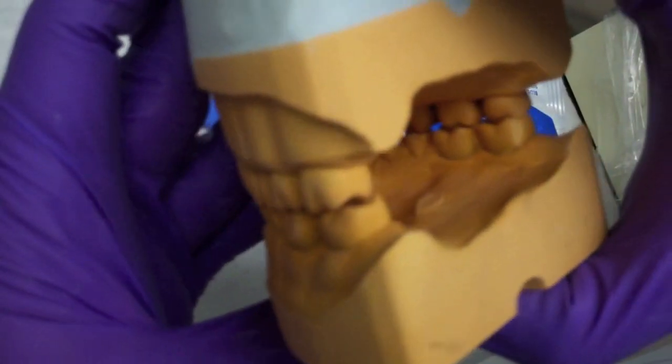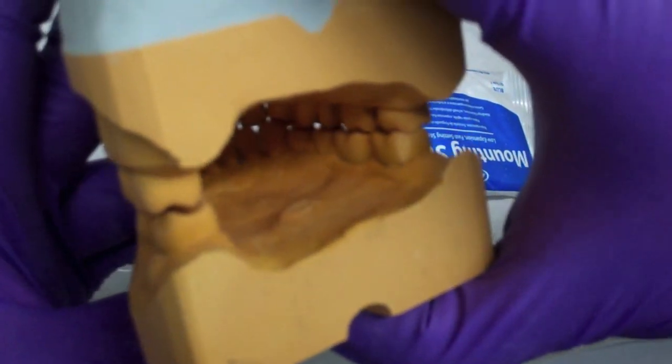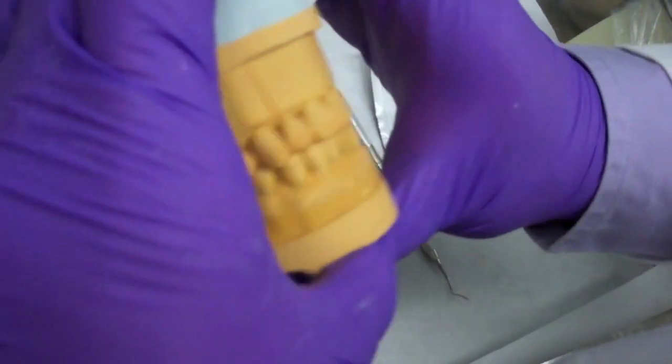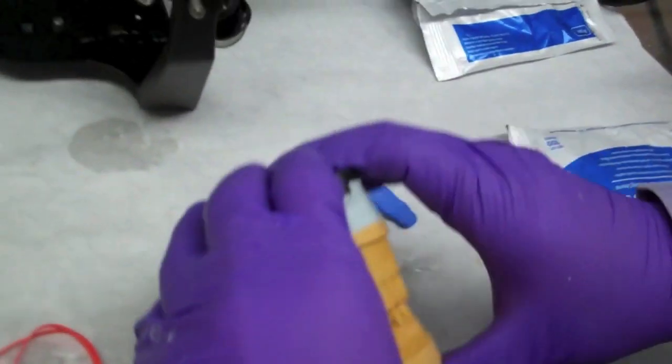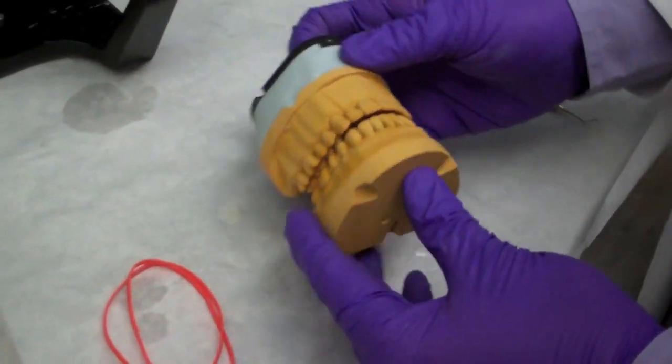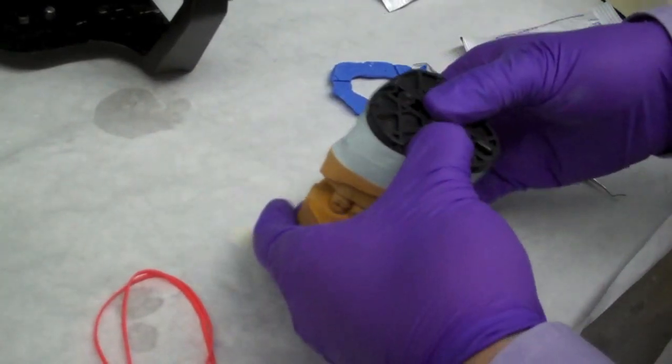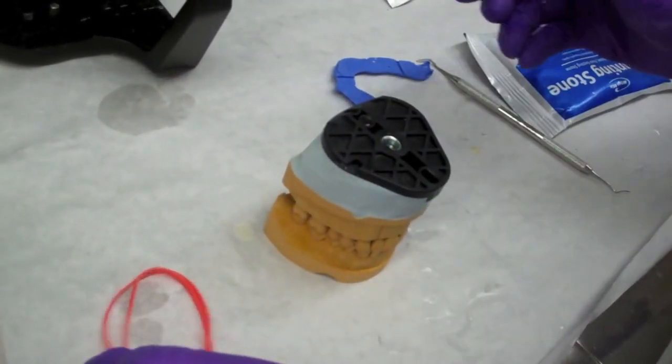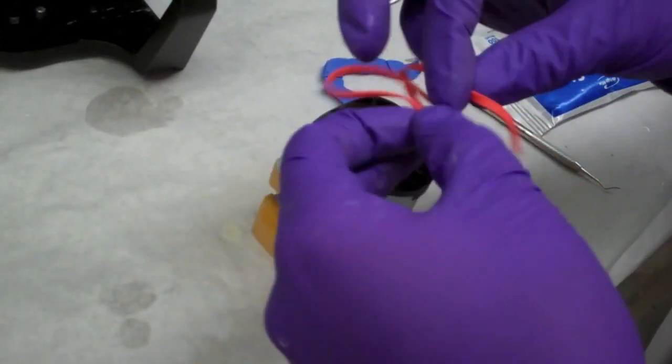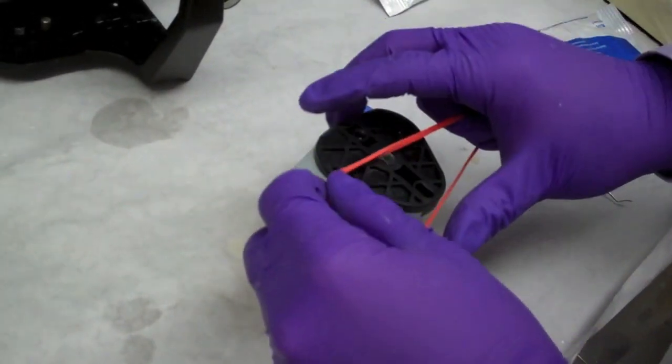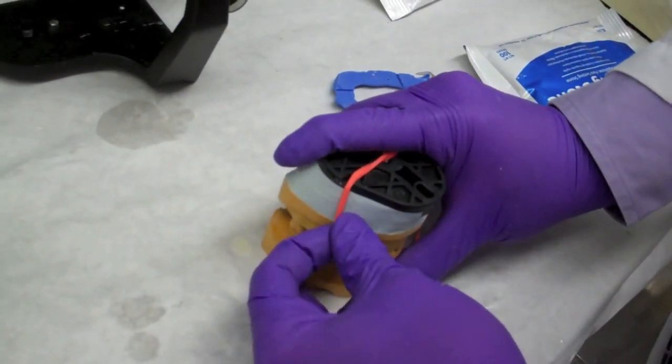Now it is time to mount the mandibular cast. When looking at the occlusion, you can see that on the patient's left side, there is no contact on the last molar. In this case, we are looking for maximum intercuspation, which means as many teeth in contact as possible. Make sure anteriors are in contact. By using a rubber band, we ensure that the occlusion will not move while articulating the mandibular cast.